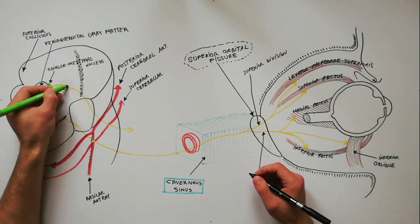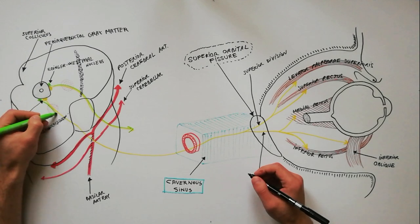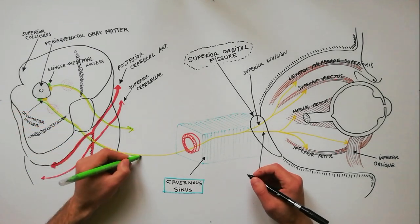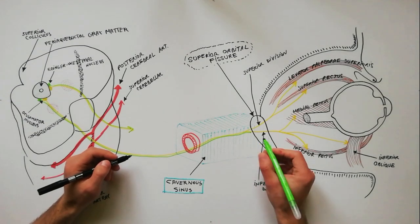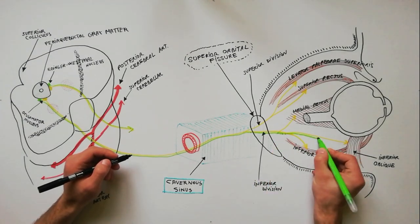These parasympathetic fibers travel within the oculomotor nerve, following the course of the inferior division, then the branch to the inferior oblique.